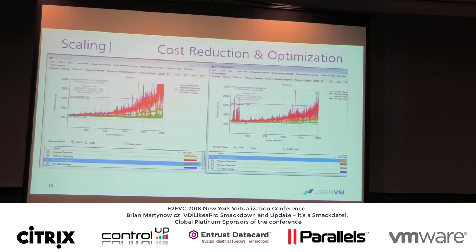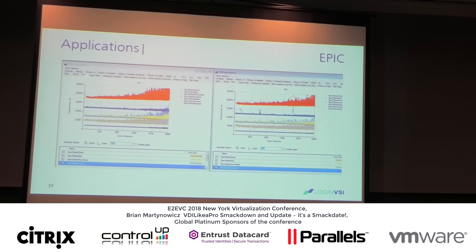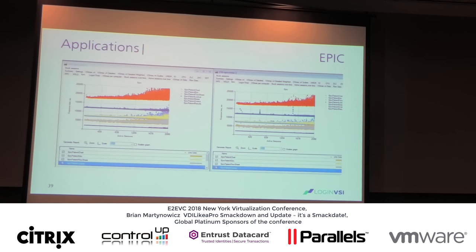One of the nice things about VSI is that you can wrap application actions within the workload in custom timers. We could see how the settings modifications actually impacted Epic at a granular level. Also, when they go from Epic 2018 to 2019, executing the same workload lets them see at a transactional level what that effect is. In our optimized example, the variance between minimum and maximum response time for things like looking up patients is much tighter.